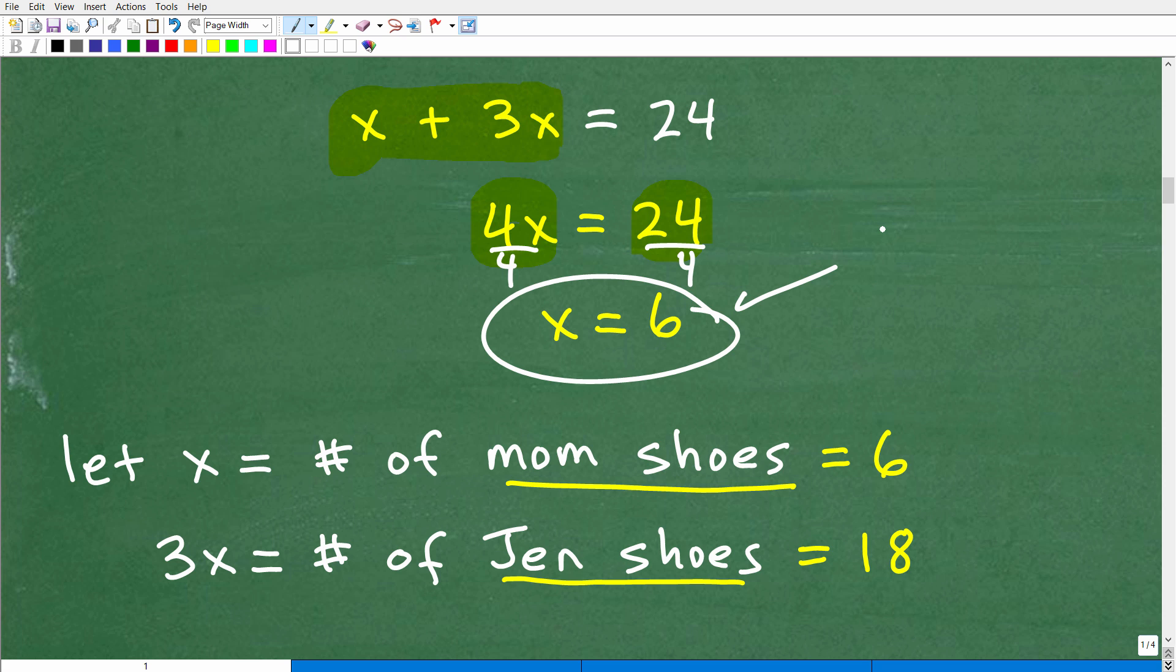Well, X is equal to 6. We have to go back to where we assigned our variables. Remember, we said let X equal the number of mom's shoes. So if X is equal to 6, the mother has 6 shoes. So Jen has 3X, so she would have 3 times 6 shoes.